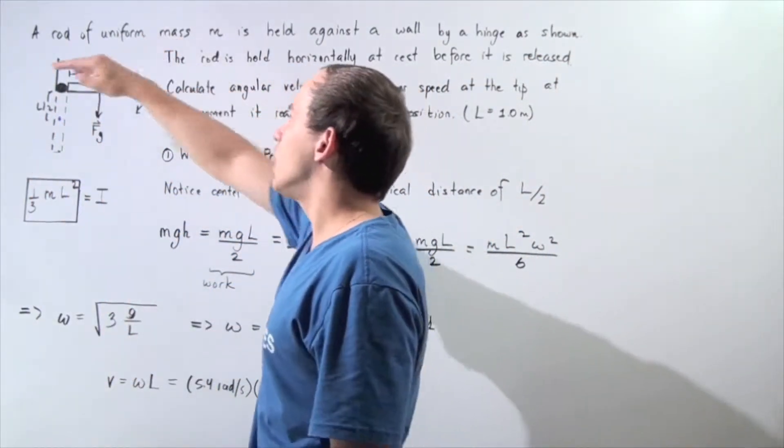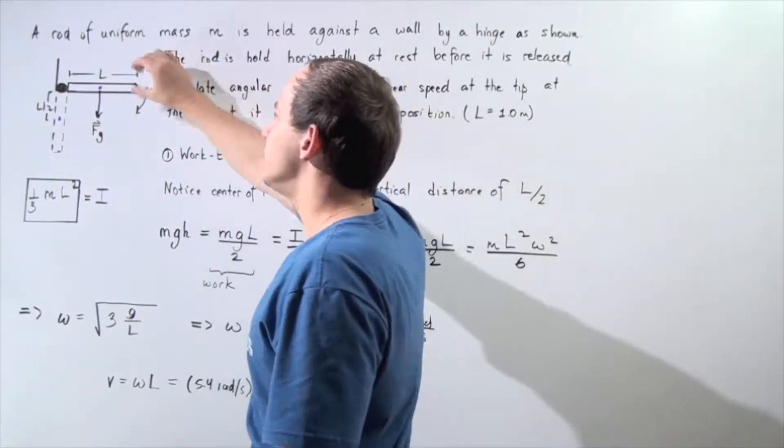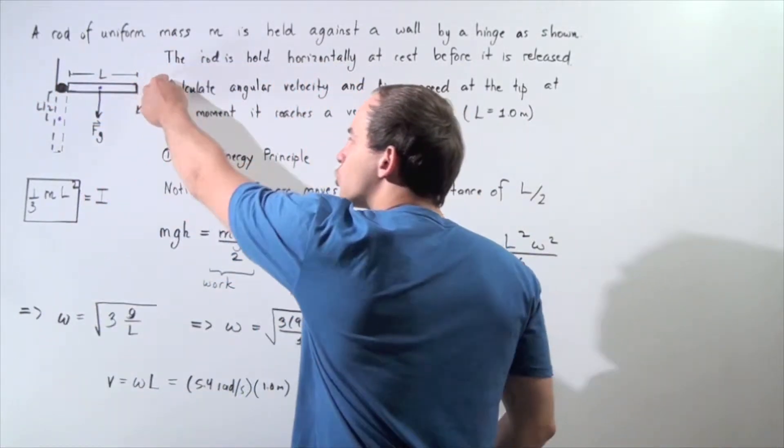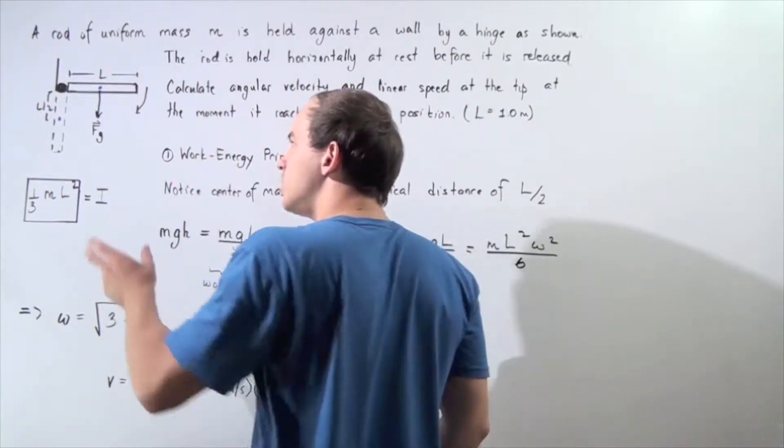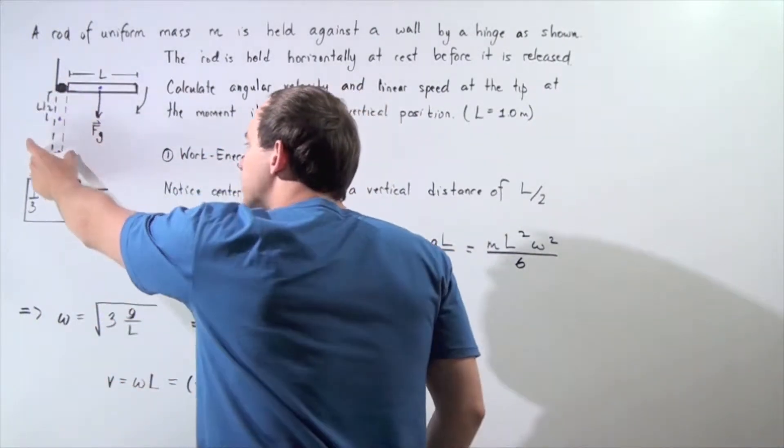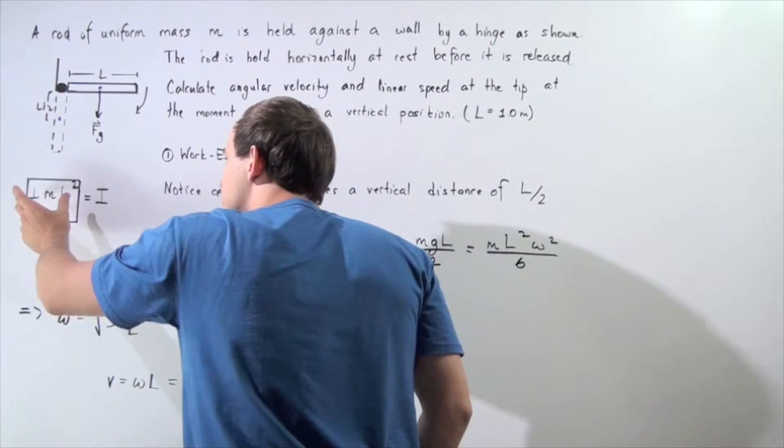We're holding the rod along a horizontal axis. As we let go, the rod begins to rotate about the hinge. Eventually, it reaches the vertical position.